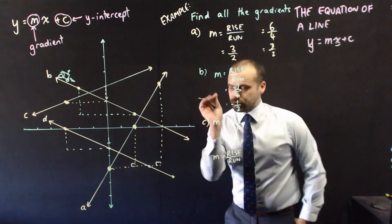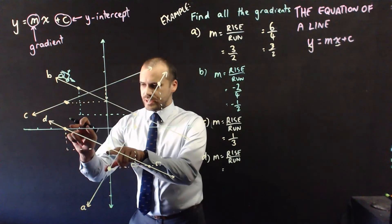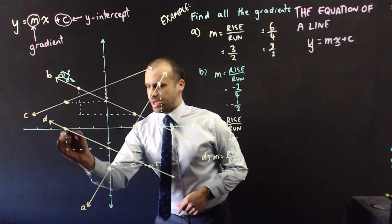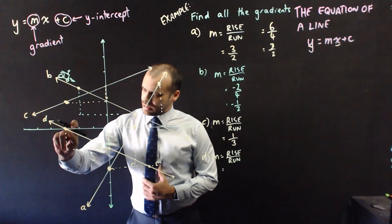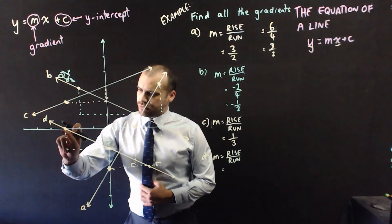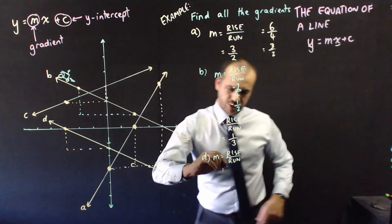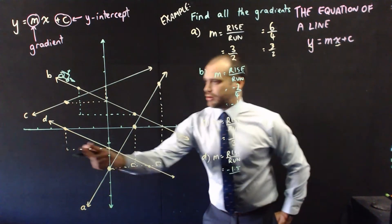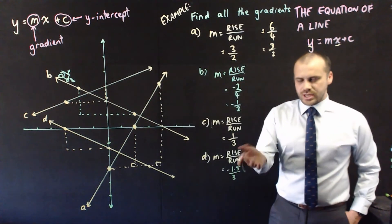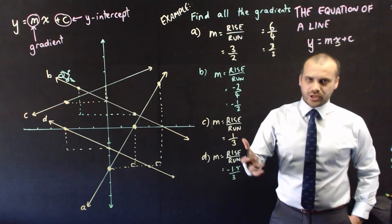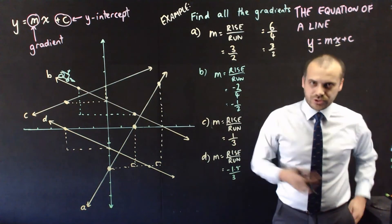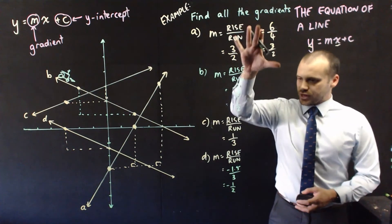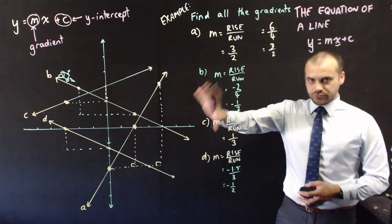And finally, D. Using the x and y intercepts, what we get is a fall of 1.5. So rise is negative 1.5 and run is 3 across. Negative 1.5 divided by 3 — you can put that into your calculator — equals negative one-half. So now I've found all of the gradients of all four lines.